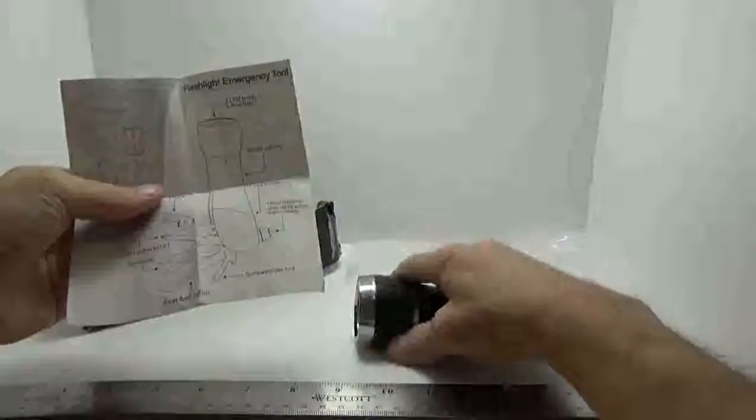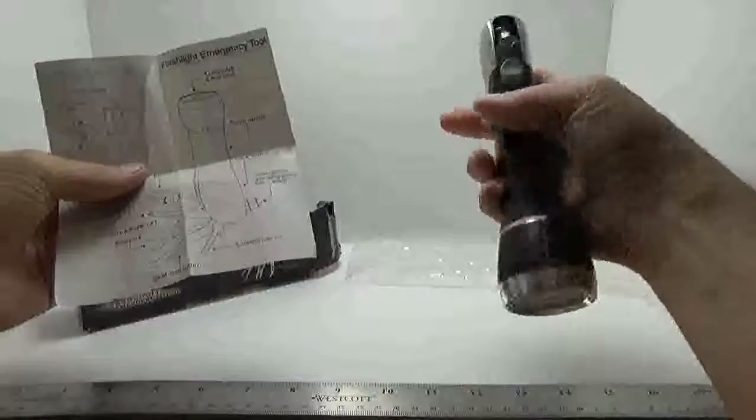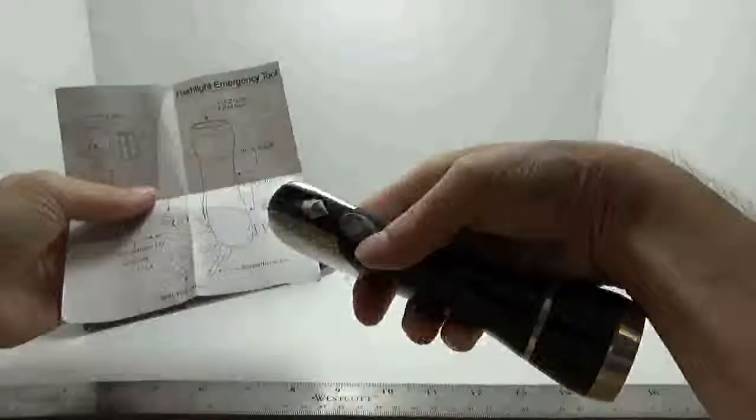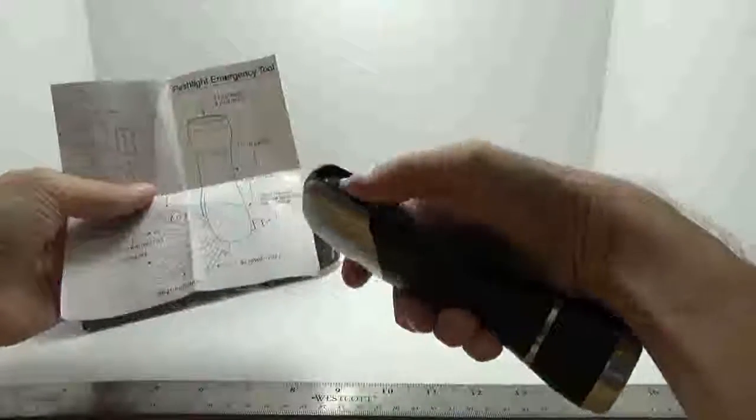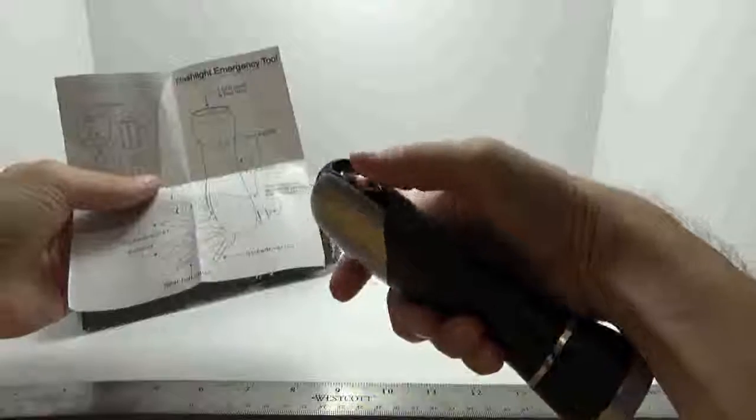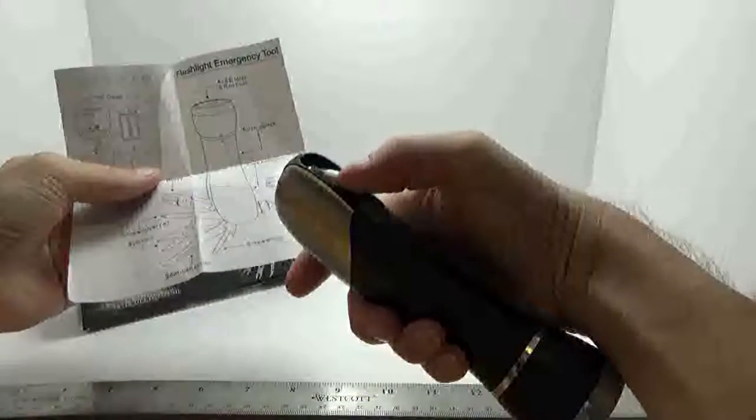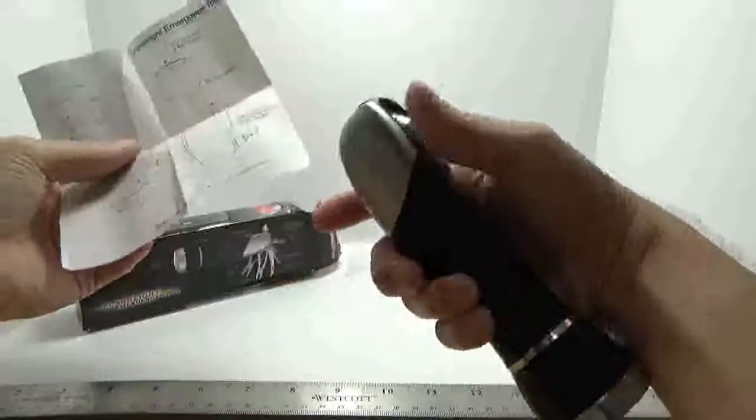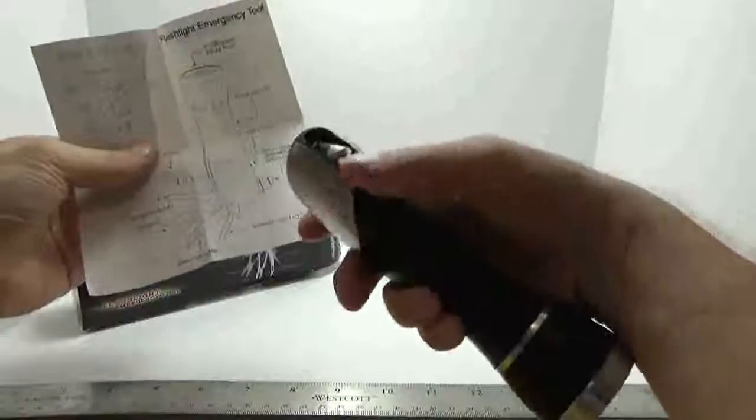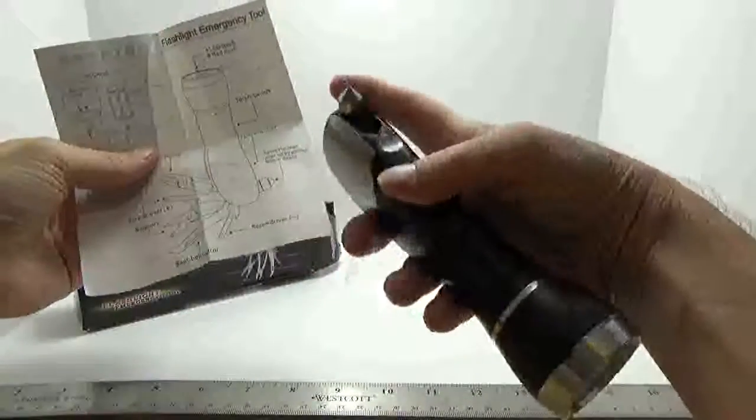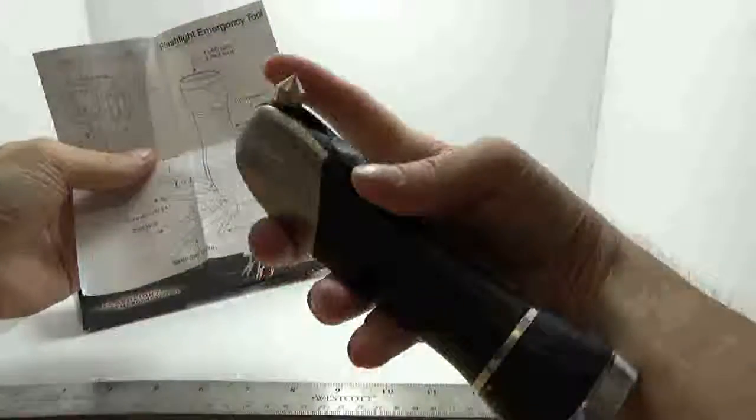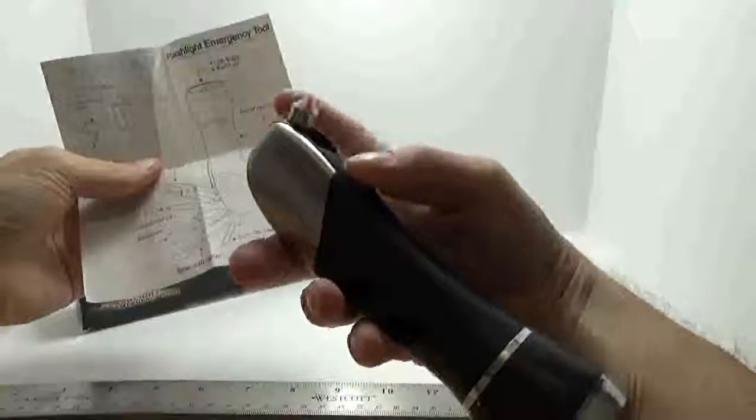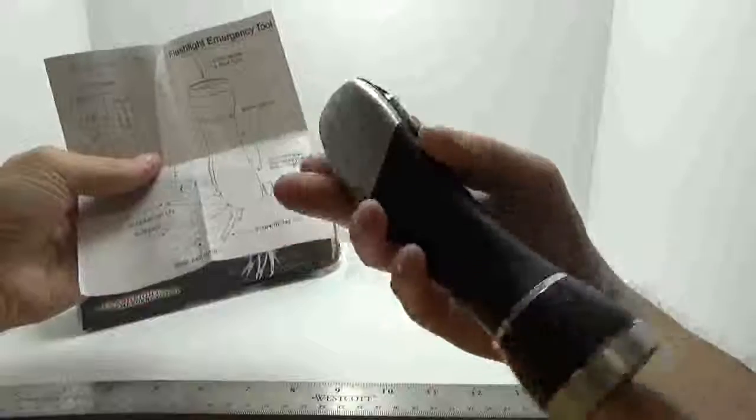And on this end over here you have this locking switch that engages or actually pops the glass breaking hammer just like that. And it doesn't fold back down, it locks. So you have to pull the little switch and then you can put it back.